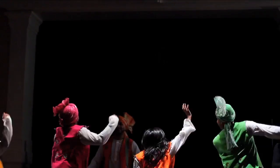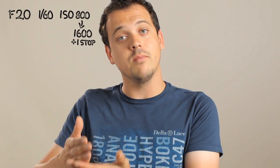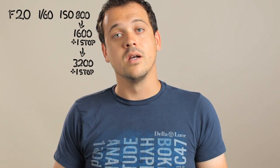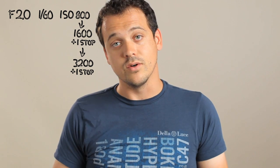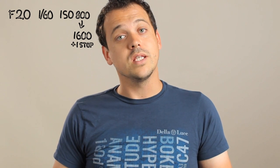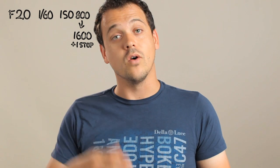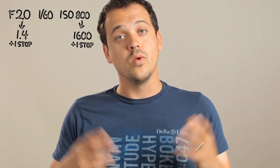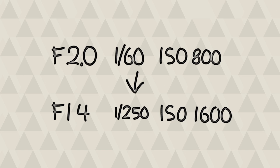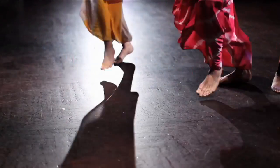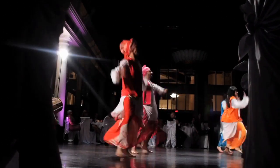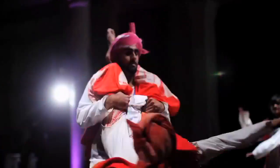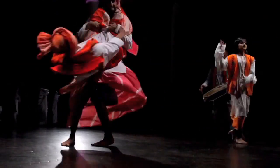We're losing two stops of light by increasing our shutter speed, so we have to make up two stops. We could do that with our ISO going from ISO 800 to 1600 — one stop — to 3200 — two stops. But you might decide you don't want to go all the way to ISO 3200 because that'll be a little noisy. So instead, bring the ISO up to 1600, making up one stop, and then make up the other stop in aperture by going from f2 to 1.4. So we change our lens to 1.4, ISO to 1600, and shutter speed to 1/250th, and we have the exact same exposure as our original settings. When you really think through these things, you're going to be really confident in your decisions.